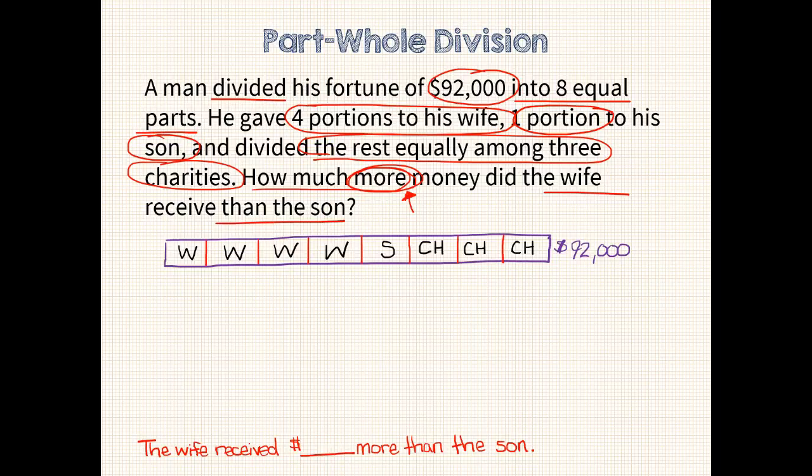Since we need to find out how much more the wife received than the son, I will cross out the units they have in common. And you can see that she has 3 more units than he does. Now I need to fill in my question mark. My next step is to figure out how much each unit is worth. If 8 units are equal to $92,000, then 1 unit is equal to $92,000 divided by 8 units total, which is $11,500. Each unit is equal to $11,500.